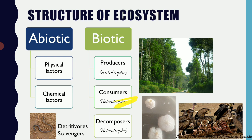The next category of biotic components are consumers. Consumers are incapable of producing their own food — they need to eat or absorb it from somewhere else. They derive their food directly from producers by eating plants, or they may eat other living organisms. Such organisms are called consumers, and they are also called heterotrophs because they do not prepare their own food but derive it from somewhere else. There are different types of consumers we will look at shortly.